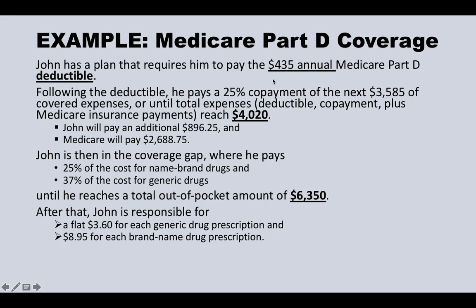To summarize the numbers: first you pay the $435 deductible, then a 25% copay — about $896 — up to $4,020. Between $4,020 and $6,350 you pay 25% for name-brand drugs and 37% for generic drugs. Anything above $6,350, you only pay $3.60 per generic prescription and $8.95 per name-brand prescription. That's basically how your prescription drug coverage works under Medicare Part D.